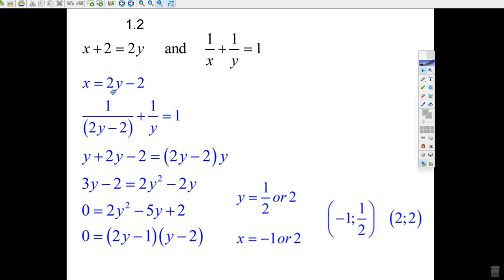If you want to find the x value, just take that half, put it back in here. 2 times a half is 1 minus 2, x is minus 1. 2 times 2 is 4 minus 2, x is 2.